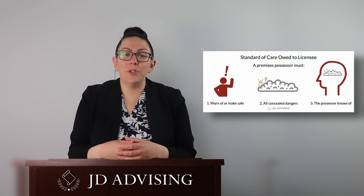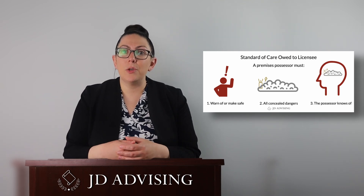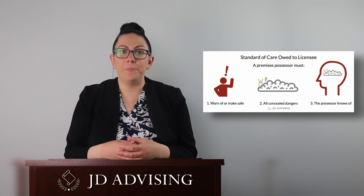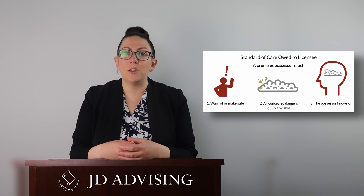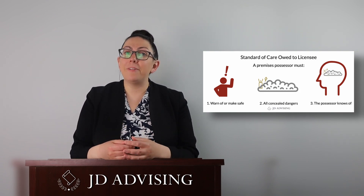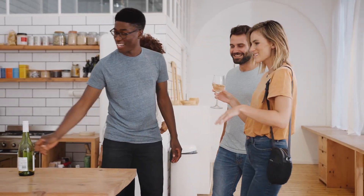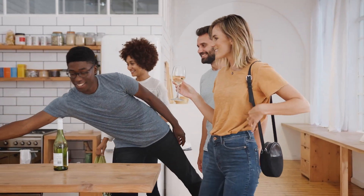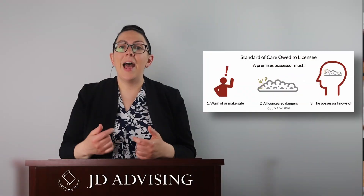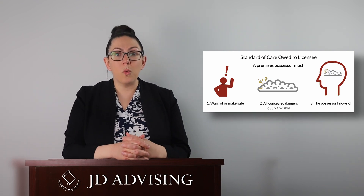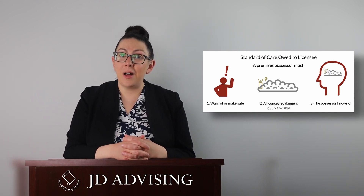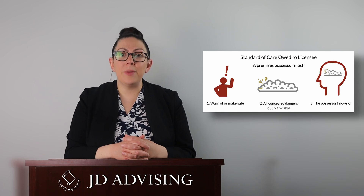Next is the duty owed to licensees. Licensees are social guests who have permission to be on the property. Here, the premises possessor must warn or make safe all concealed dangers that the premises possessor knows of. For instance, if my friends come over for dinner and I know there is a loose floorboard that poses a tripping hazard but it's hard to see unless you know it's there, I have a duty to warn my friends about that loose floorboard. If I don't warn them and someone trips and falls, that person could sue me for negligence.